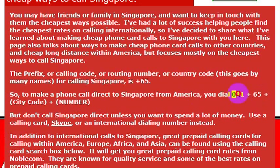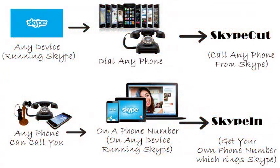So again, the international dialing code is 011, then you dial the country code for Singapore, which is 65. But I wouldn't really recommend calling direct — your phone company will charge you a lot of money.